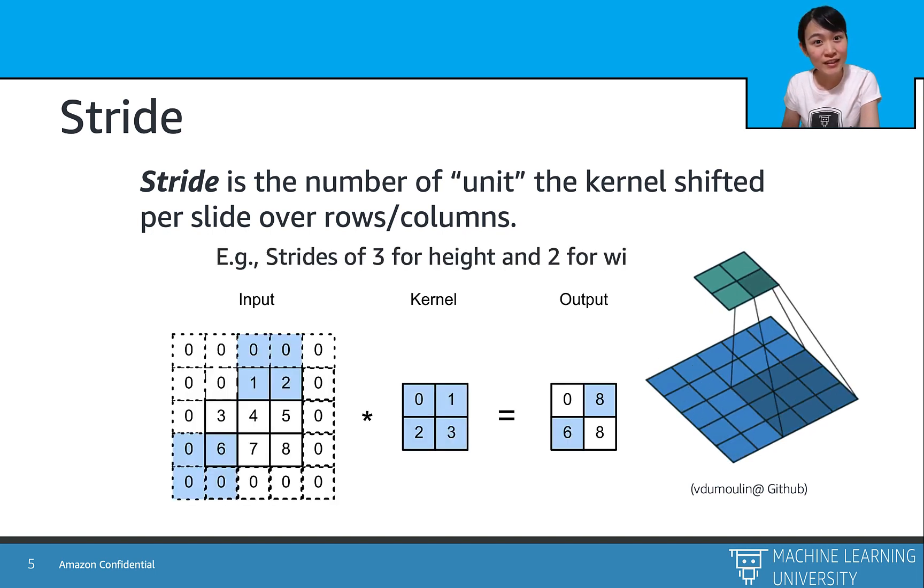Here is a concrete example of a stride of 3 for height and 2 for width. How do we calculate the number 6 in the output? The convolutional window slides down 3 rows from the first rows on the input, and then element-wise multiply the kernel weights.